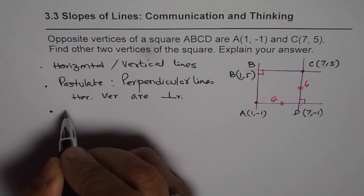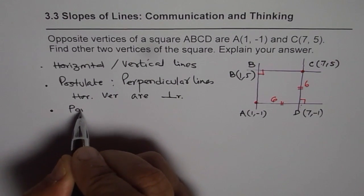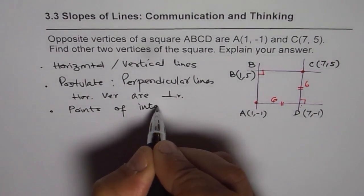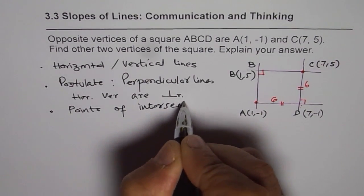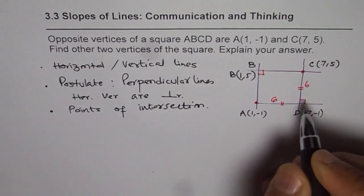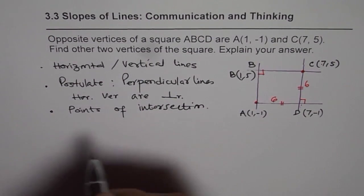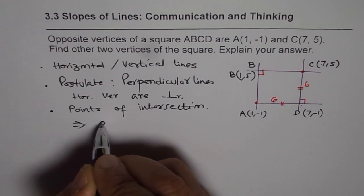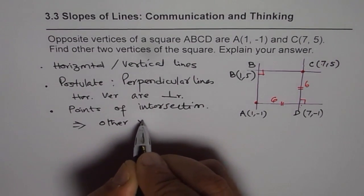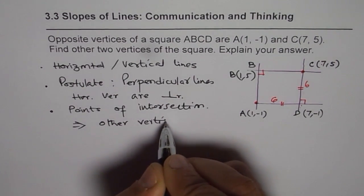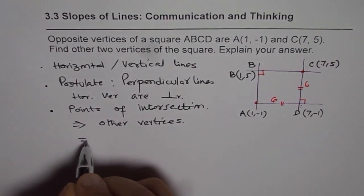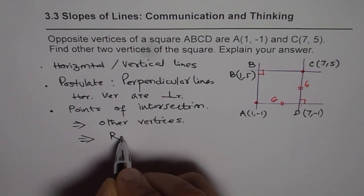Now, they will intersect. So, we found points of intersection. And these points of intersection gave us the other vertices.